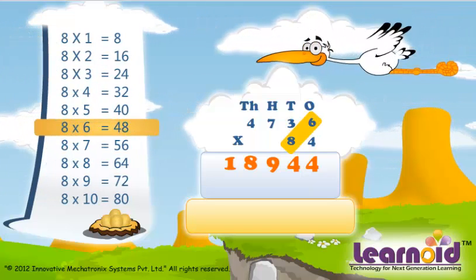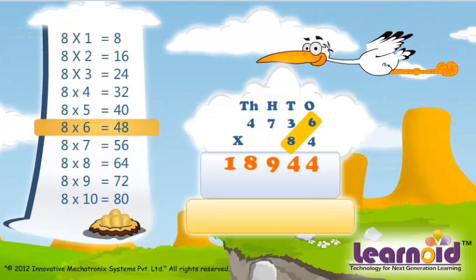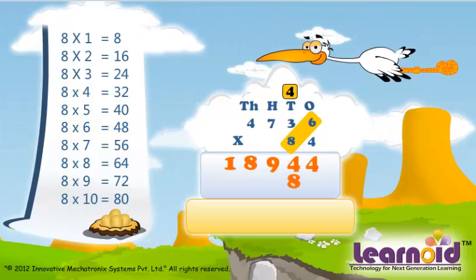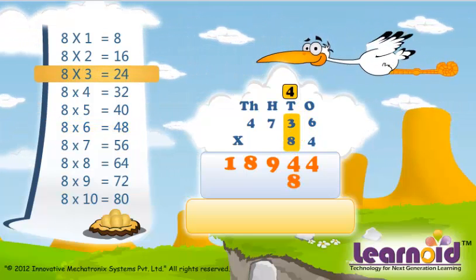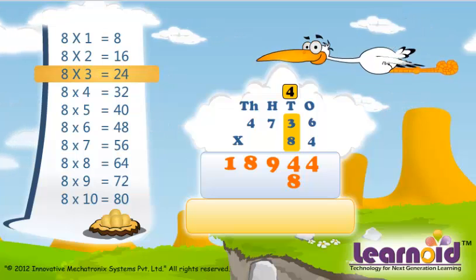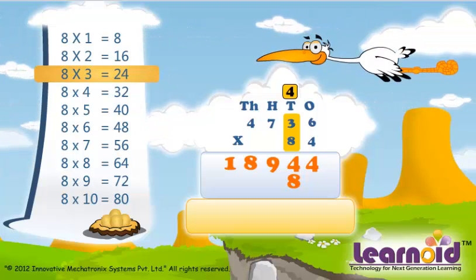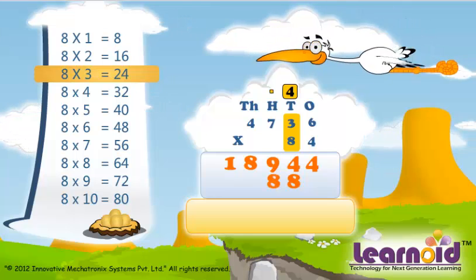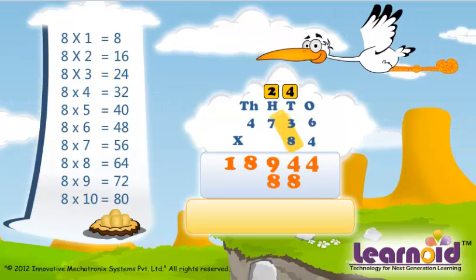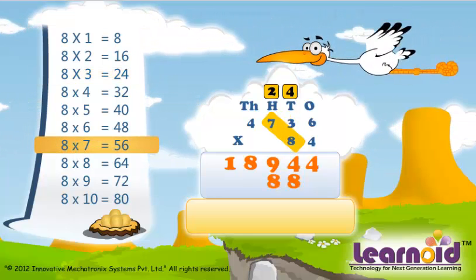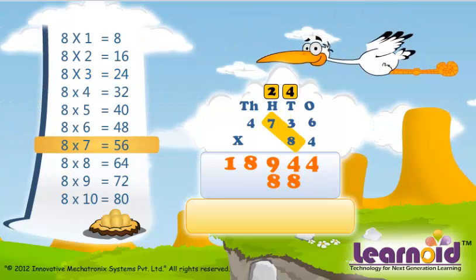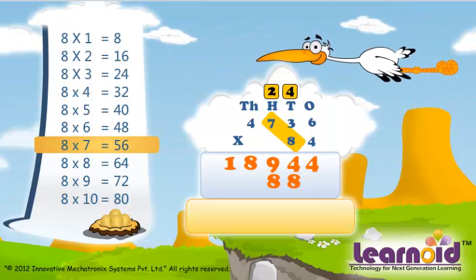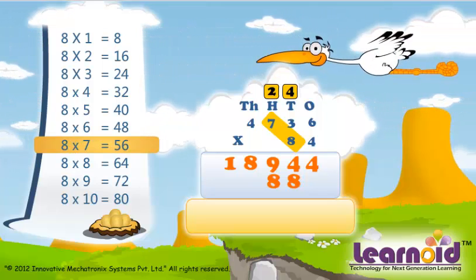8 x 6 is 48. 8 x 3 is 24, 24 plus 4 is 28. 8 x 7 is 56, 56 plus 2 is 58.